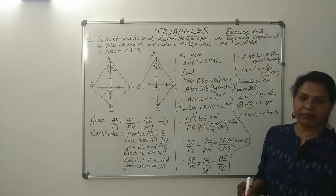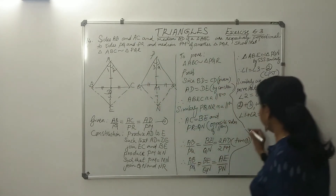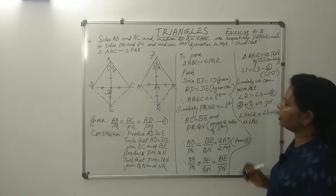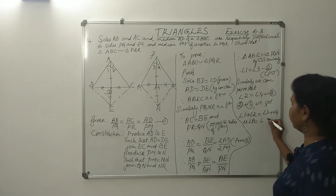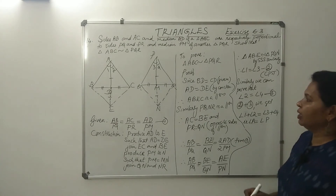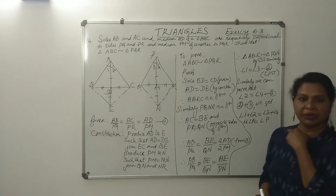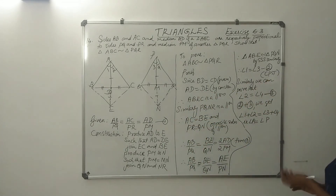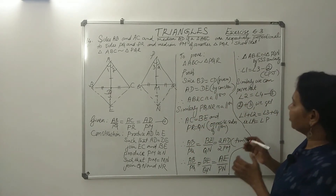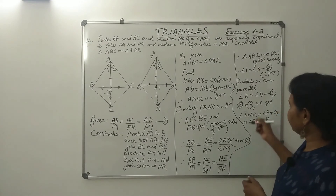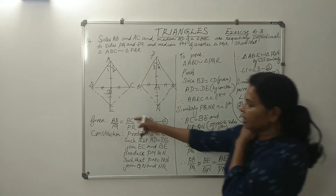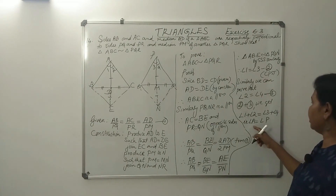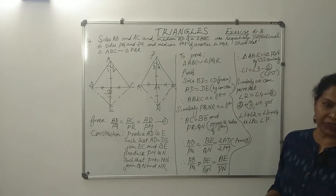What is angle 1 plus angle 2? That is angle A. And angle 3 plus angle 4 is angle P. So angle A equal to angle P. Now we have to prove triangle ABC similar to triangle PQR. That is the property we needed: AB by PQ equal to AC by PR, and angle A equal to angle P.